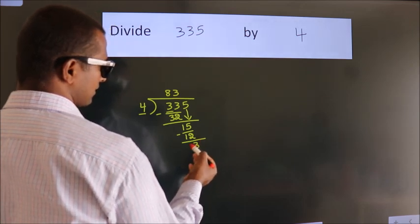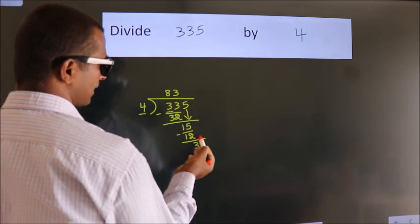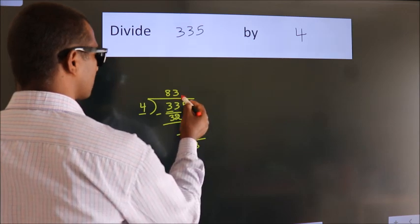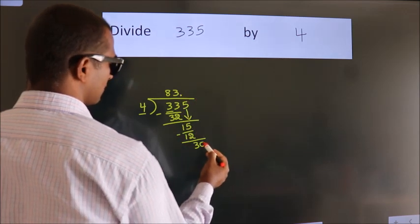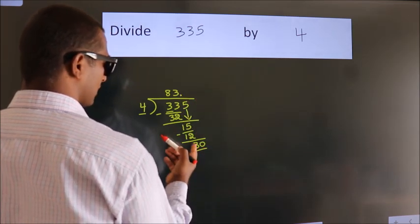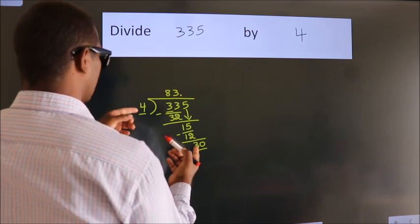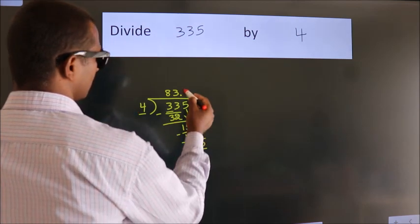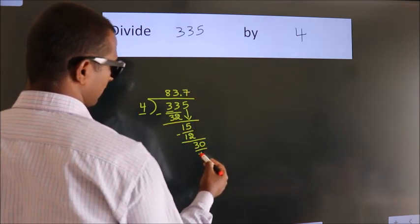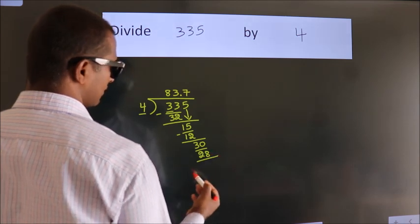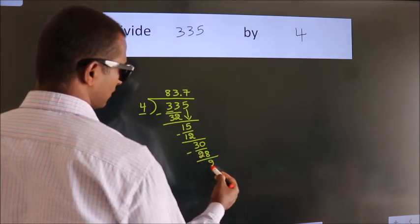After this, no more numbers to bring down. So what we do is put a dot and take 0, giving us 30. A number close to 30 in the 4 table is 4 times 7, which is 28. Now we subtract. We get 2.